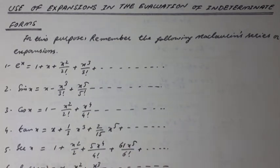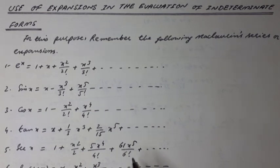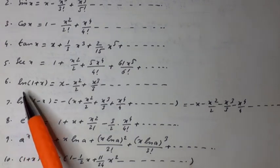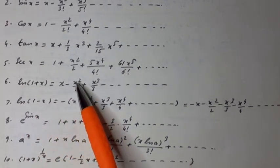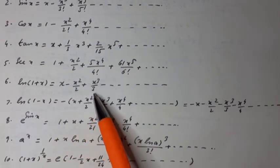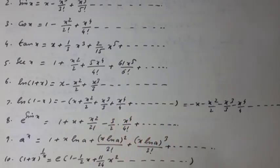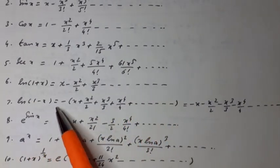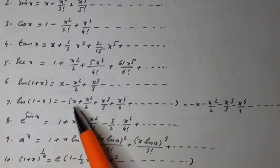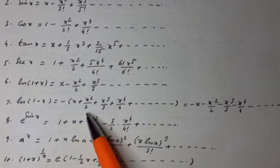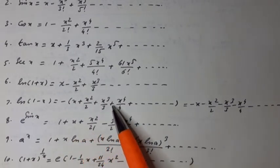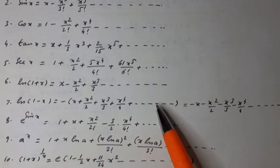sec x is equal to 1 plus x squared over 2 plus 5 x to the power 4 over 4 factorial plus 61 x to the power 6 over 6 factorial plus so on. Natural log of 1 plus x is equal to x minus x squared over 2 plus x cubed over 3 minus so on. Natural log of 1 minus x is equal to minus times x plus x squared over 2 plus x cubed over 3 plus x to the power 4 over 4 plus so on.